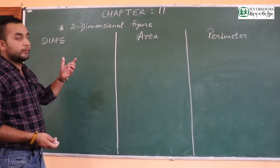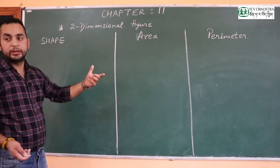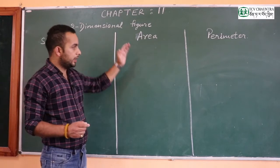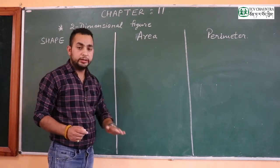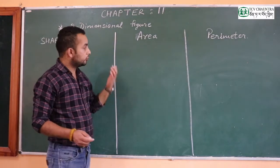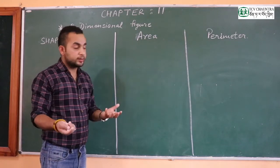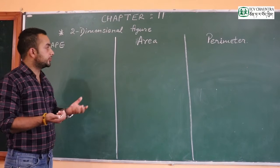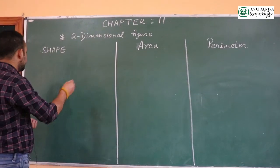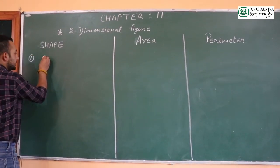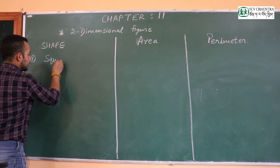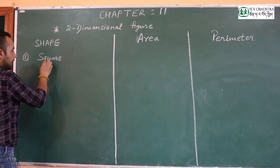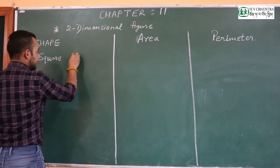Now we are talking about two-dimensional figures on the basis of their shape, area, and perimeter. We will recall the formulas one by one. The first figure is the square.